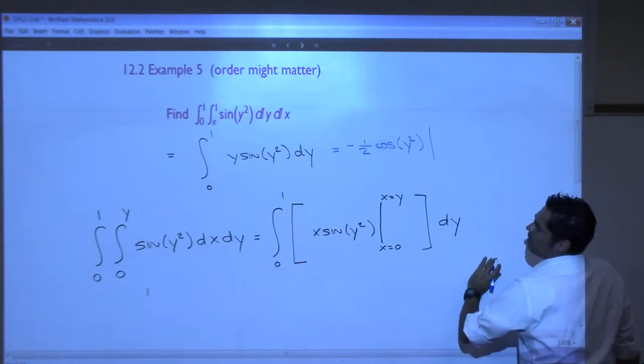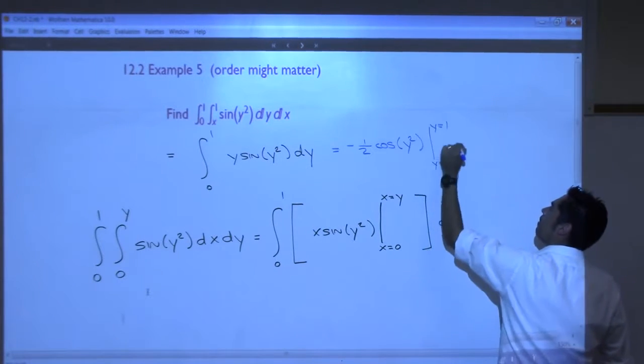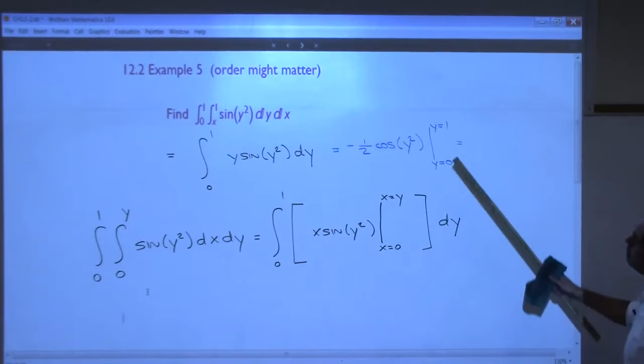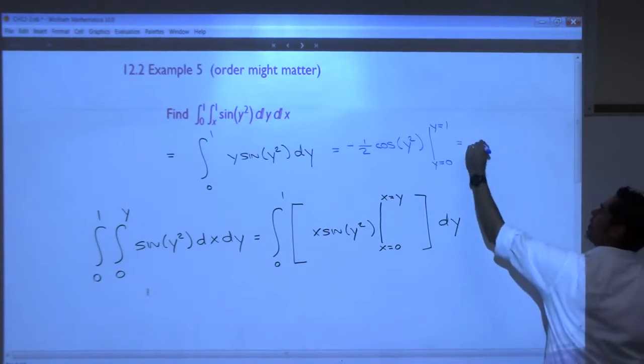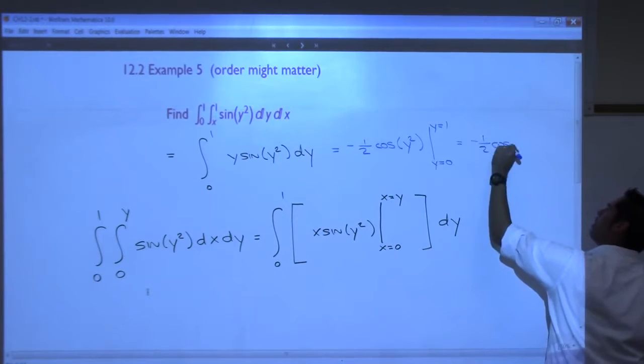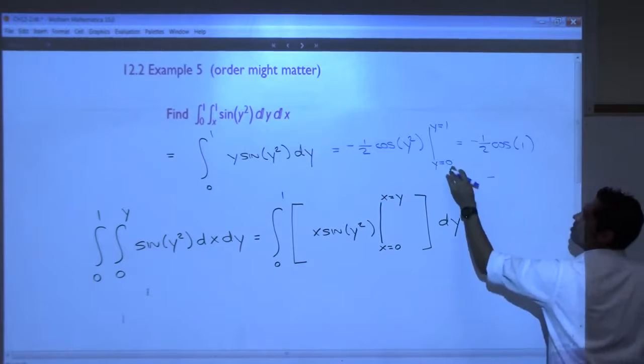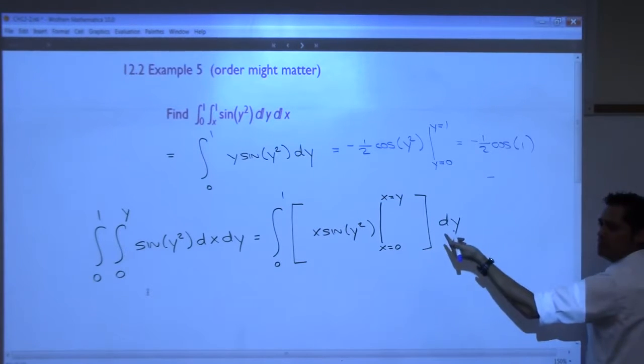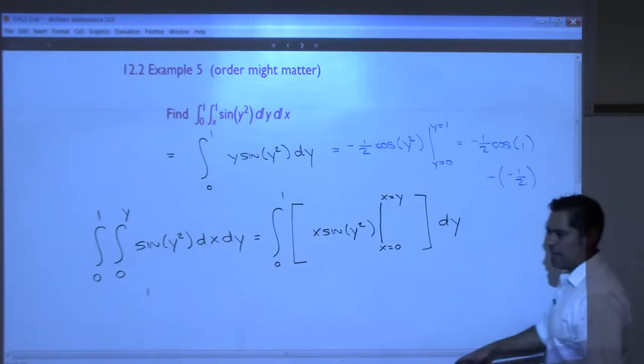Alright, and then I'm evaluating what? Y is 0 to 1. Plug in 1, you get cosine of 1. So negative 1 half cosine of 1, and then minus cosine of 0 is 1, so minus negative 1 half. So you're going to get negative 1 half cosine 1 plus 1 half, whatever that is, just leave it, that's the exact answer.